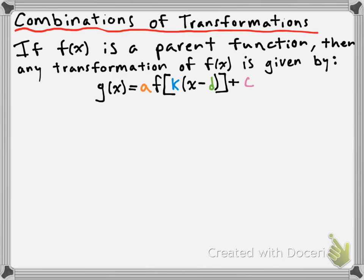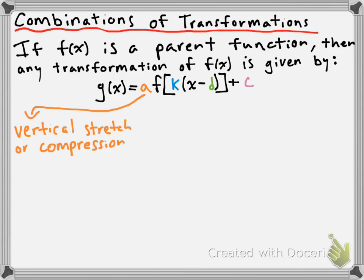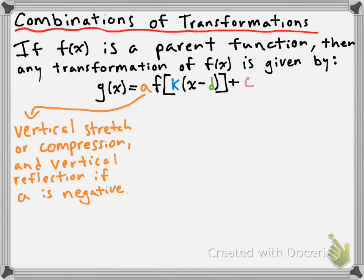So you might recall that the a value controls vertical stretches and compressions, and it follows the exact same rules. If a is larger than 1, then you have a vertical stretch. If a is between 0 and 1, you have a vertical compression. Now, when we combine vertical stretches and compressions with reflections — remember that multiplying by negative 1 gave a vertical reflection — that negative can be absorbed into the a value. So if a is negative, then you also have a vertical reflection, which is also known as a reflection in the x-axis.